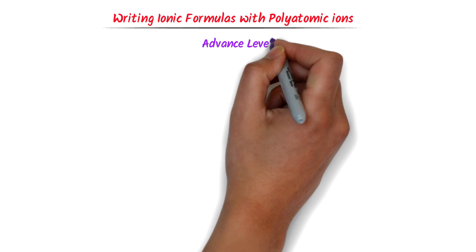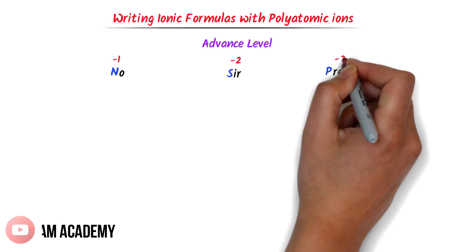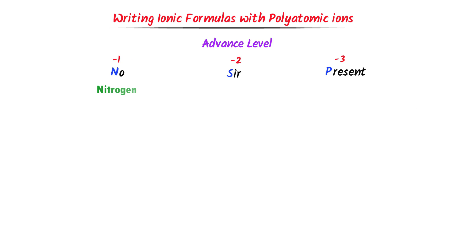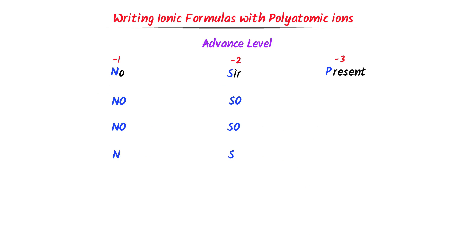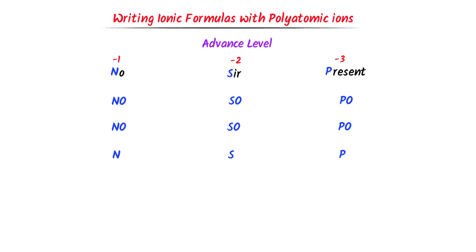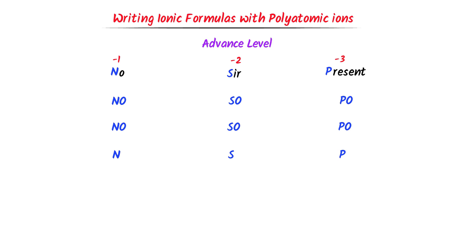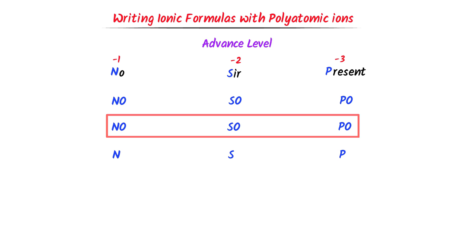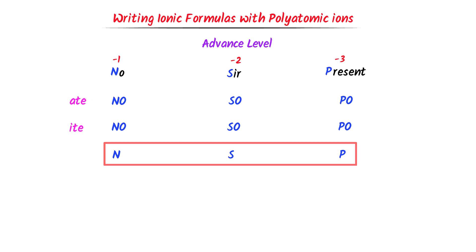Now let me teach you the advanced way of writing chemical formulas of ionic compounds. I use the mnemonic NO SUR PRESENT, with charges −1, −2, and −3. N stands for nitrogen, S stands for sulfur, P stands for phosphorus. I write NO, NO, N for the nitrogen family; SO, SO, S for sulfur; and PO, PO, P for phosphorus. I always start naming from the second row: the second row gets the suffix ITE, the first row gets ATE, and the third row gets IDE.